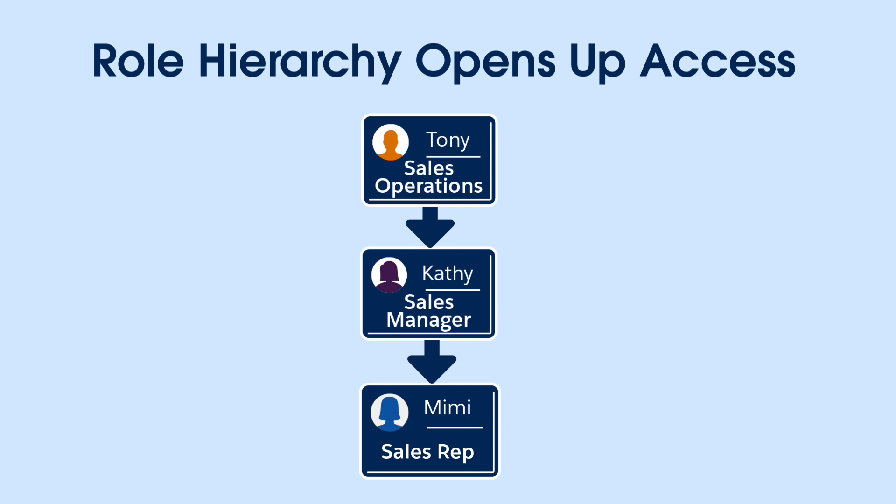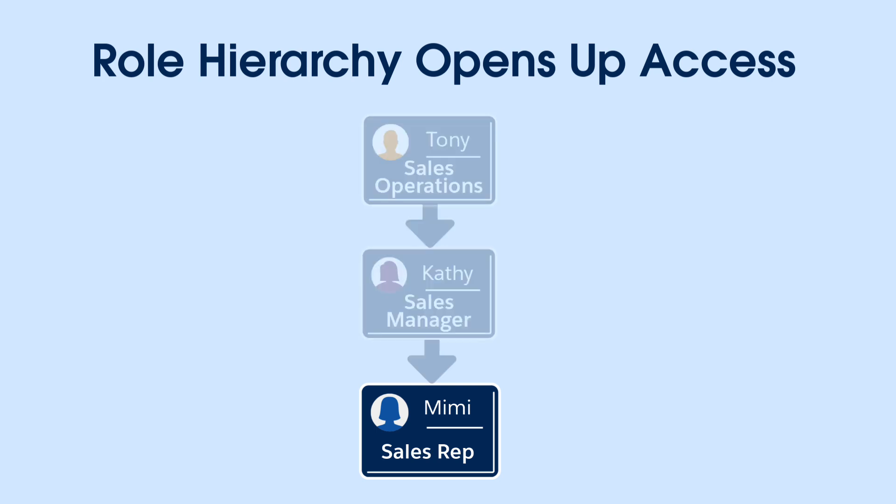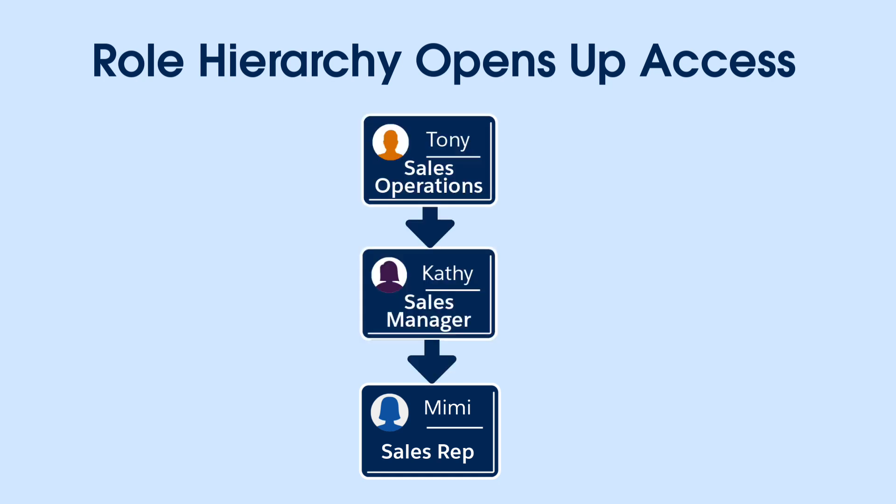The hierarchy at AW Computing should look something like this. At the first level, we have inside sales reps. The sales manager can see all records below them, and sales ops are at the top level, so they can see all records owned by roles beneath them. In addition, you select the access that roles have to contacts, opportunities, and cases associated with accounts that they own, regardless of who owns the contacts, opportunities, and cases themselves.